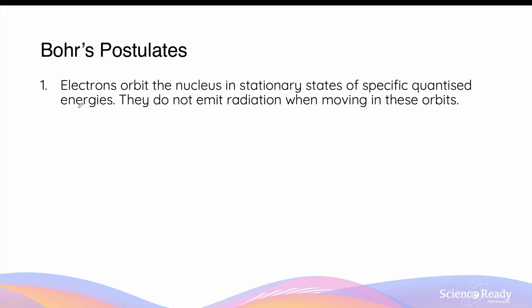In Bohr's model, he proposed three postulates. In the first postulate, Bohr proposes that electrons orbit the nucleus in what he called stationary states, with each electron orbit being associated with a specific and quantized energy level. This means the radius as well as the energy associated with each orbit is a multiple of a number, which is why they are described as quantized. Bohr also said that when the electrons orbit in these stationary states, they do not emit radiation as predicted by Maxwell's electromagnetism theory, and therefore their energy will remain constant, allowing them to maintain a stable orbit.